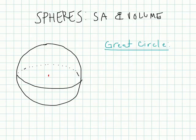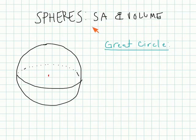Welcome to Geometry 6-6. We're looking at spheres, their surface area, and their volume. Before we get into the formulas and solving some problems, we just need to look at a few definitions here to help us understand all the points.